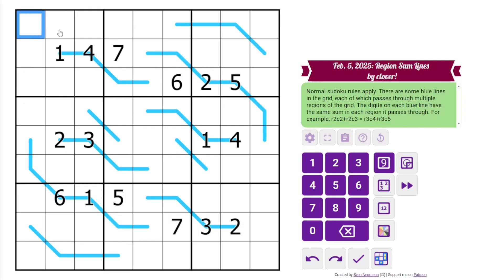Normal Sudoku rules: 1 to 9 in each row, column, and 3 by 3 box. Additionally, we have some blue lines in the grid, and in each region that the blue line appears in, the sum is the same on that line. So these sum to 5, that means these also sum to 5. These sum to 7, that means these also sum to 7, and these also sum to 7, and so on.